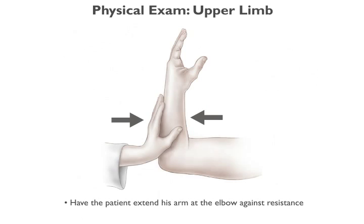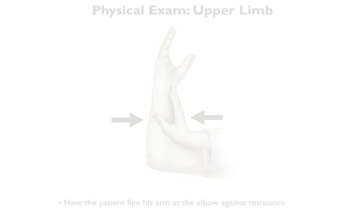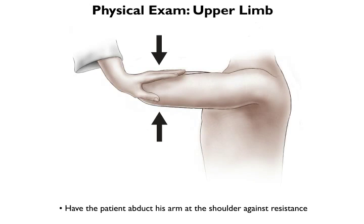Next, have the patient try to extend his arm at the elbow against resistance, and then flex his arm against resistance. Finally, ask the patient to abduct his arm at the shoulder against your resistance.